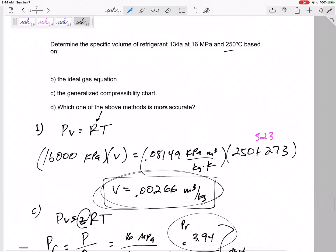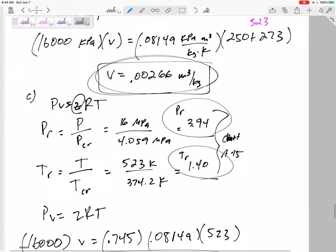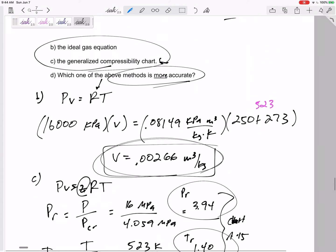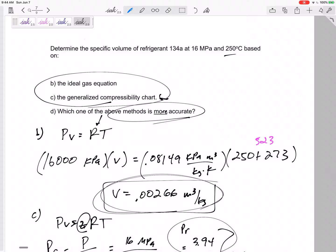Okay, now which of these above methods is more accurate? If we're only comparing these two, C would give me more accurate. So C is more accurate than B. Now the property tables would be even more accurate than the generalized compressibility chart. So property tables most accurate, next most accurate would be the compressibility chart, least accurate is the ideal gas equation.